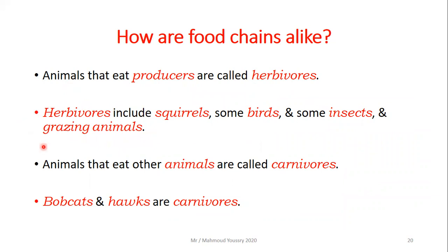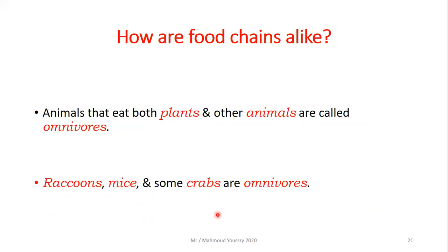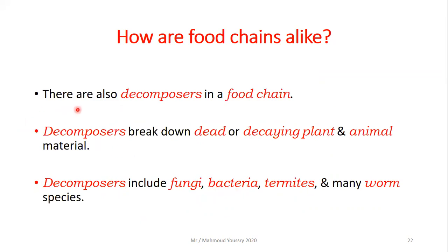Animals that eat producers are called herbivores. Herbivores include squirrels, some birds, some insects, and grazing animals like cattle, sheep, cows, and buffaloes. Animals that eat other animals are called carnivores — like bobcats and hawks. Animals that eat both plants and other animals are called omnivores — examples include mice and some crabs.